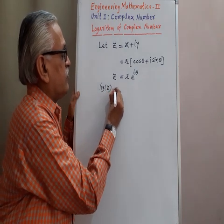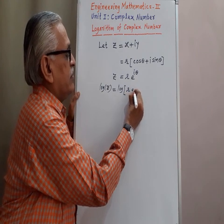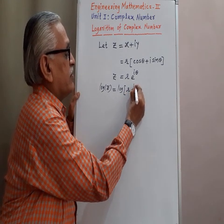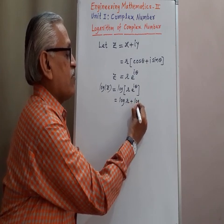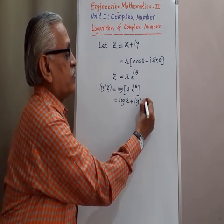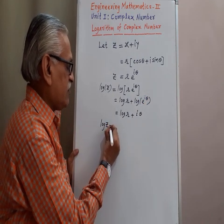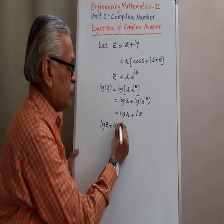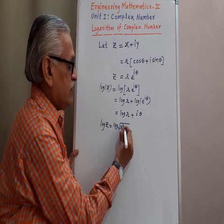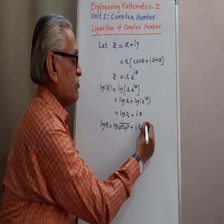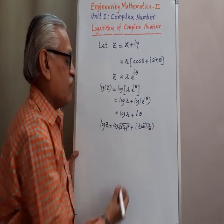So Z is equal to log of R·E raised to i theta, which gives log of R plus log of E raised to i theta. Here R is the square root of X squared plus Y squared, and theta is tan inverse of Y by X.